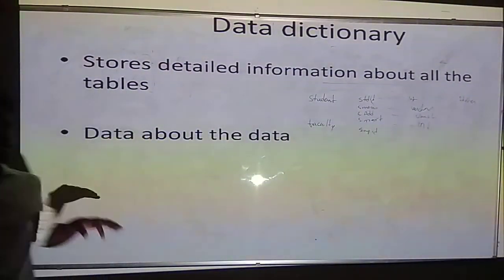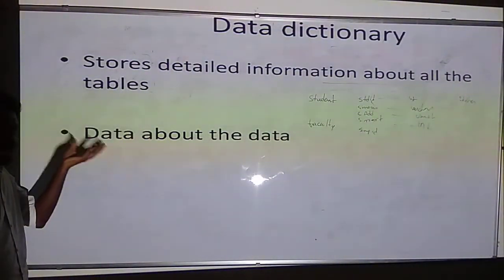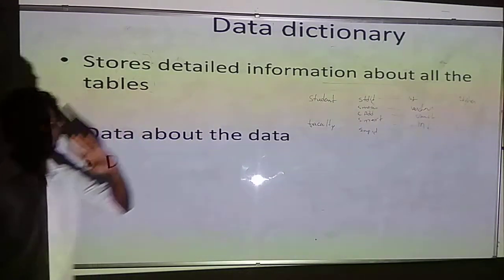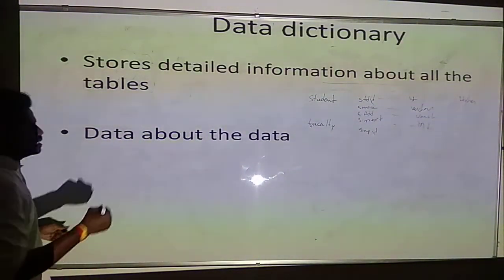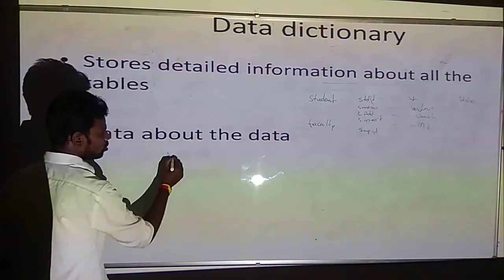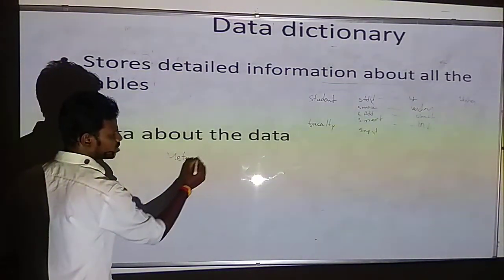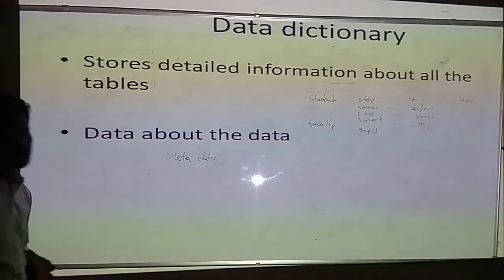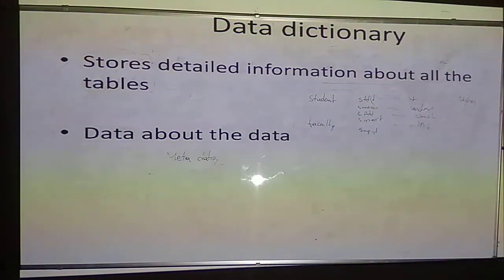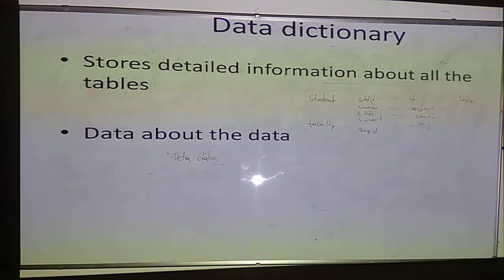In other words, data dictionary stores data about the data that you are storing in your database. This is also called metadata — data about the data. In order to store the details about the database, we use data dictionary, which is very helpful in order to retrieve the data and not lose the data in your database management system.